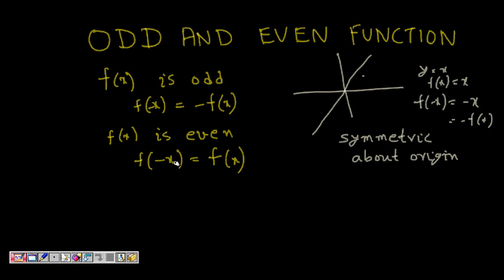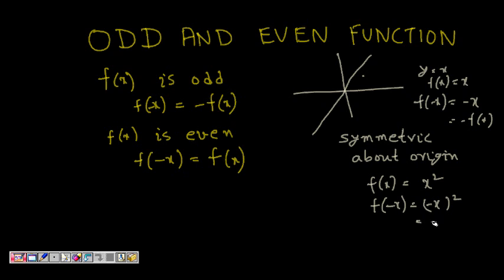Now let's see an even function. If f(x) = x², then f(-x) is (-x)², which is (-x)×(-x), which is x². So f(-x) equals f(x).